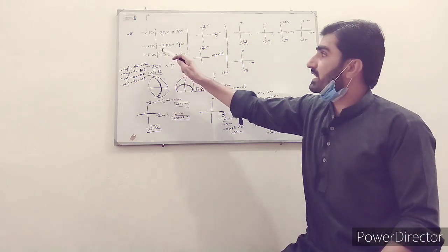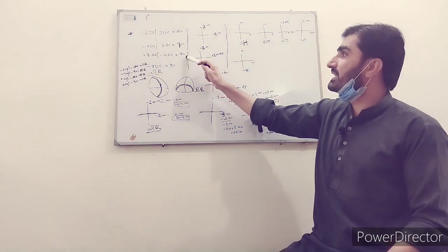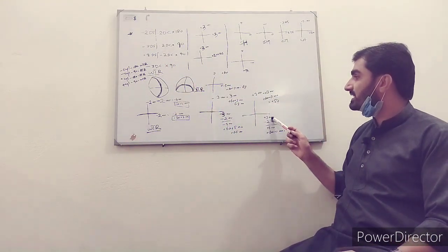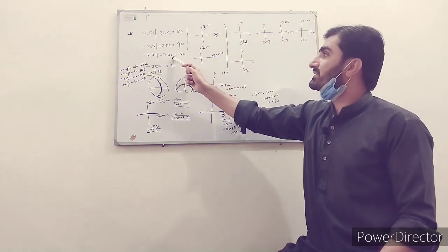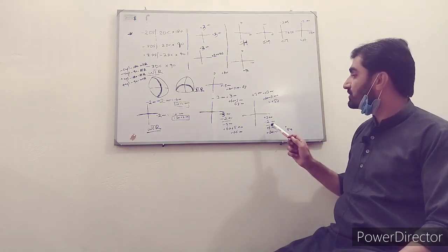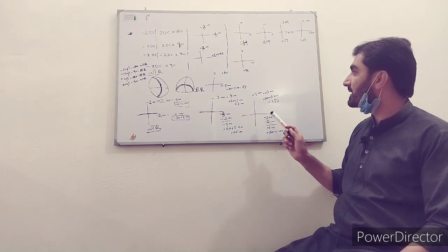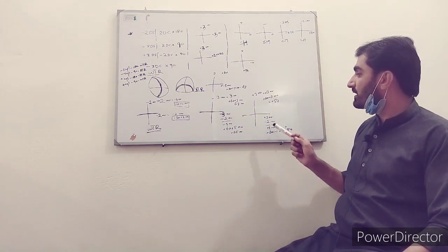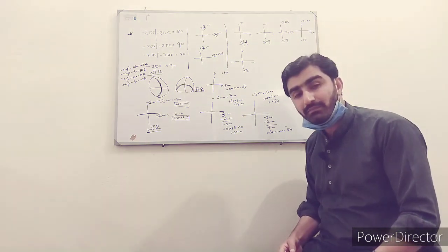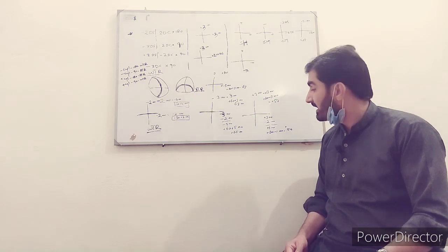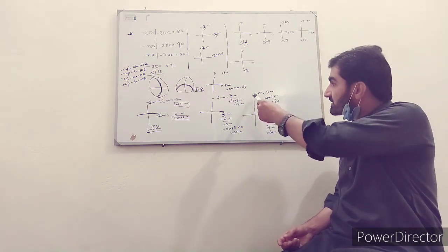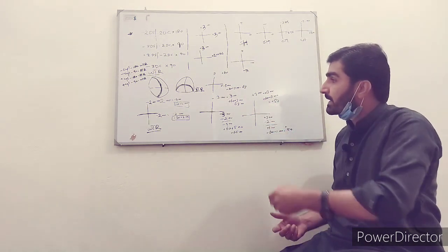Third prescription: +3 DS / −2 DC × 90°. Spherical +3 at both meridians. Cylinder at 90° means cylindrical power is at 180°. At horizontal: +3 + (−2) = +1; at vertical: +3. Adding +60: horizontal = 61 − correction: 60 − 1 = 59, vertical = 60 − 3 = 57. Power at horizontal meridian is greater than vertical — this is against-the-rule astigmatism. Both meridians are plus, so this is compound hypermetropic against-the-rule astigmatism.